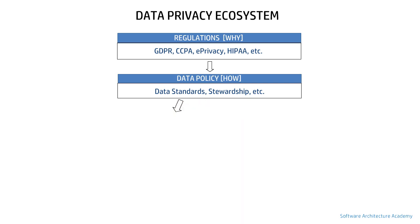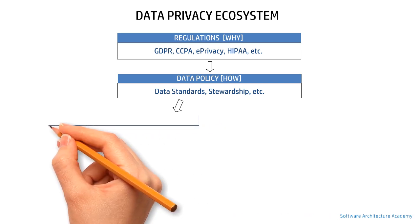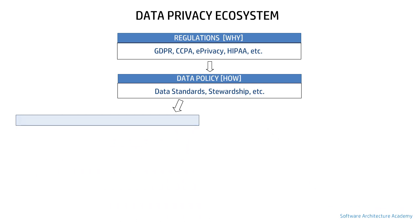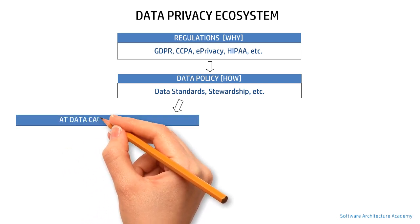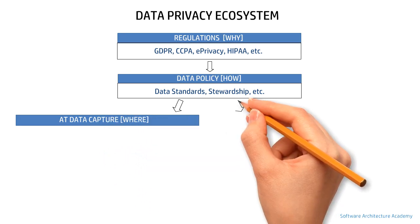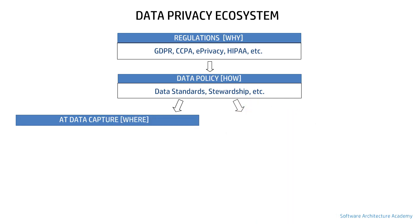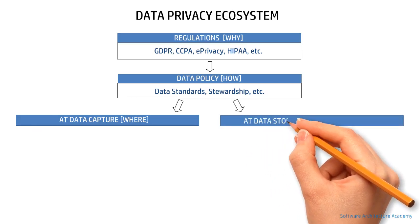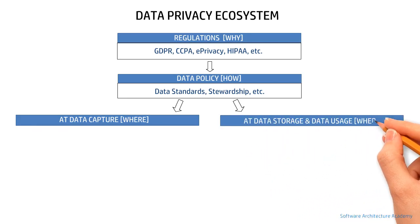Now let's focus on where data privacy should be implemented. Data privacy should be implemented in all higher-level phases of the data life cycle, namely at data capture, during data storage, and during data usage. At the data capture phase, there are two concepts widely used.